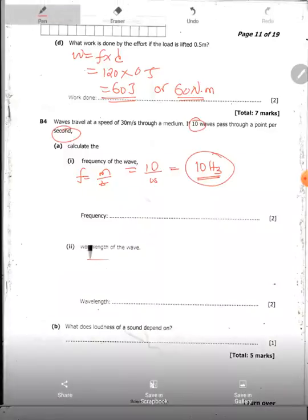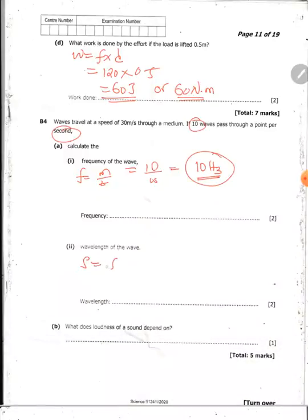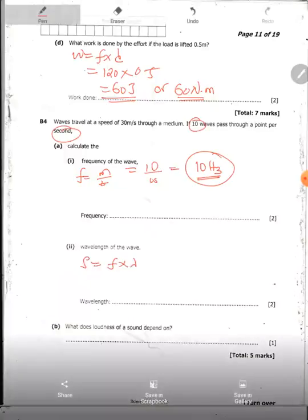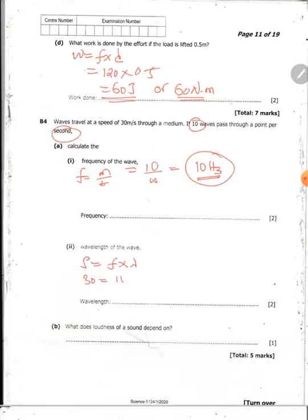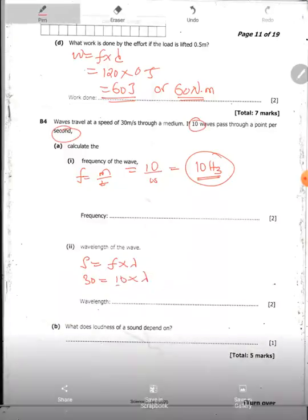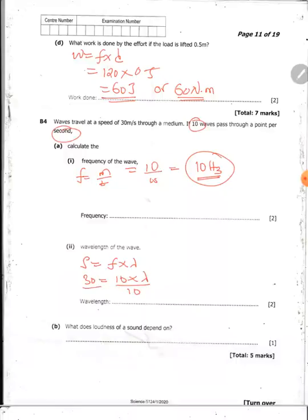Wavelength of the wave. Now we know that speed is equal to frequency times wavelength. Speed has been given to be 30 meters per second. Frequency we have is 10 times lambda, which is the symbol for wavelength. So divide both sides by 10. Then we're going to have lambda is equal to 3 meters. Distance should always be in meters.